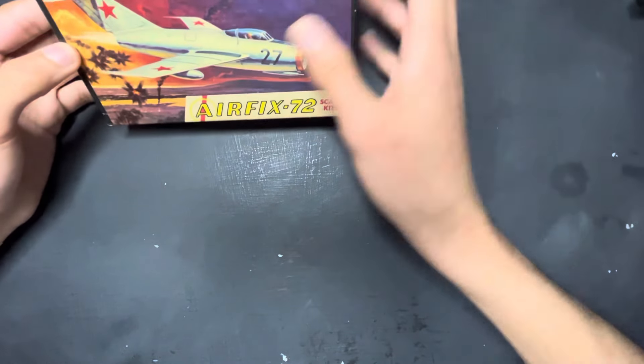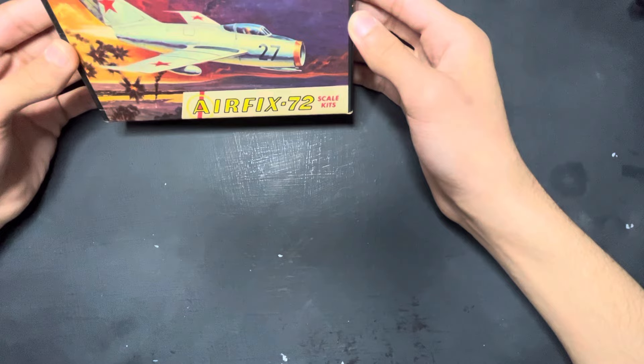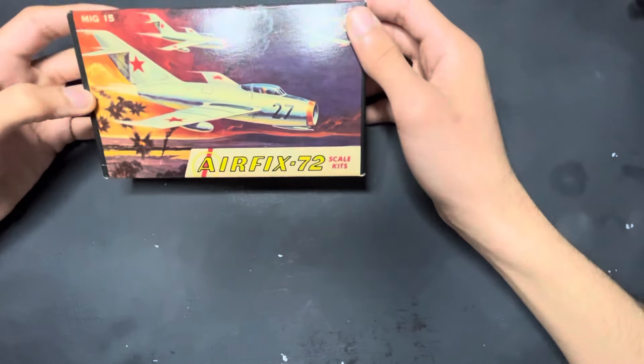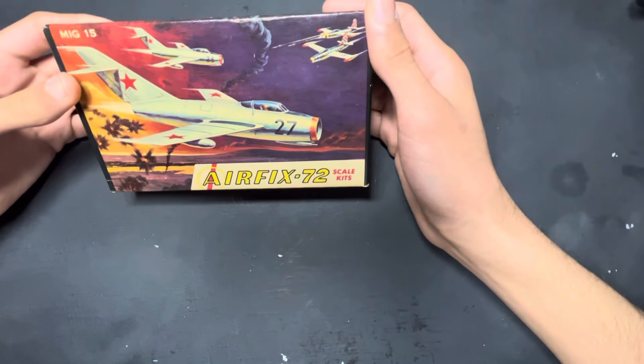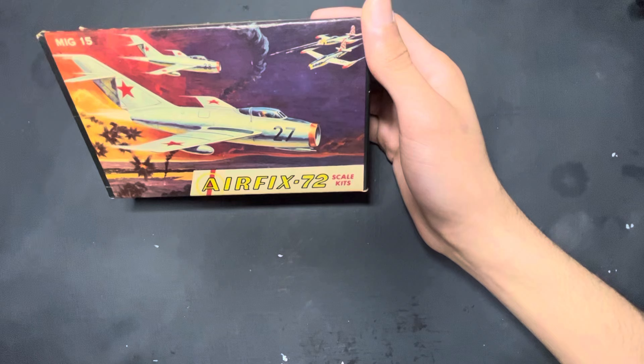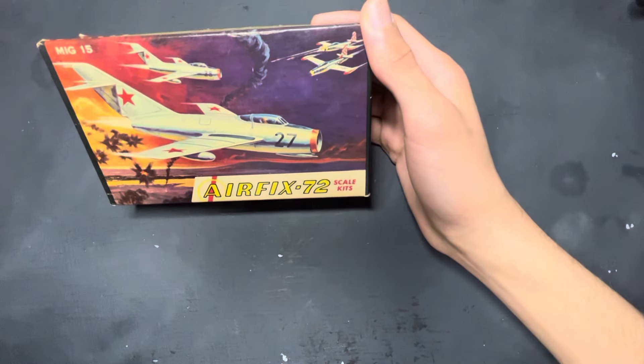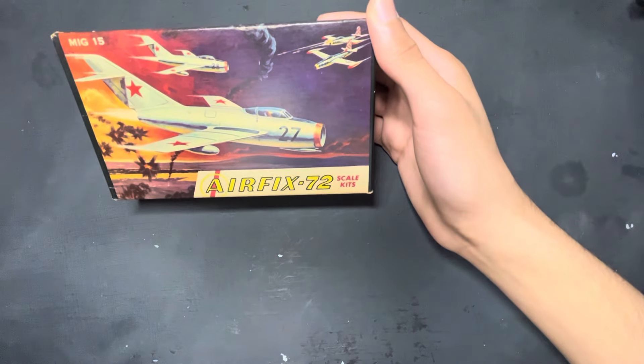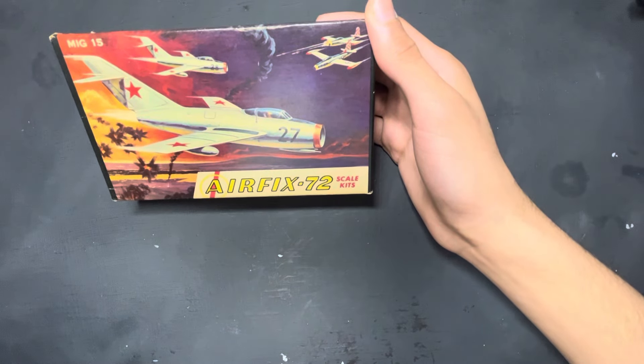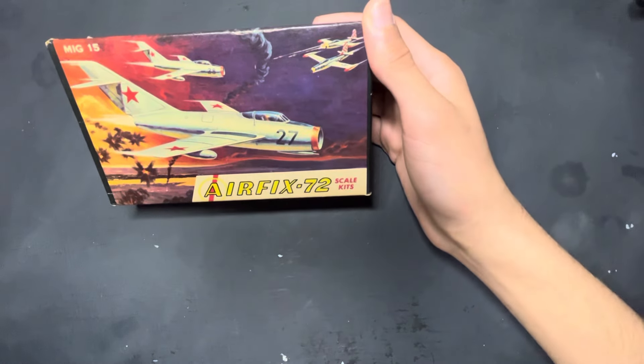On this side it shows their Hawker Hurricane and Typhoon, and this has a display stand. There's a nice box art on it. I love the box art. I'm not sure when this could be represented, maybe Korea. These are F-84s.